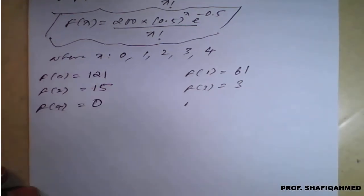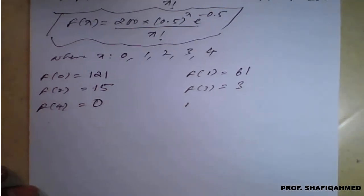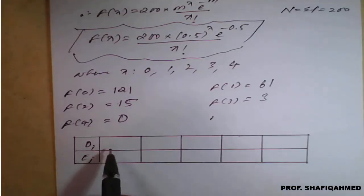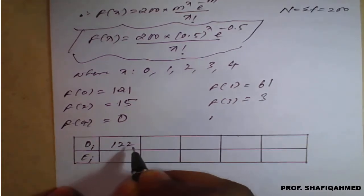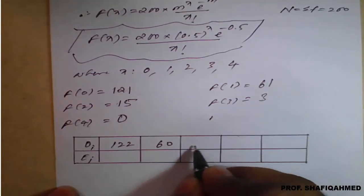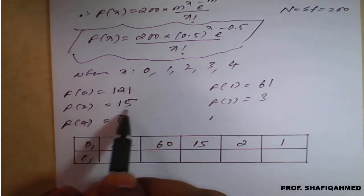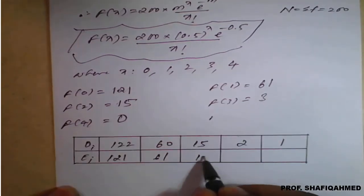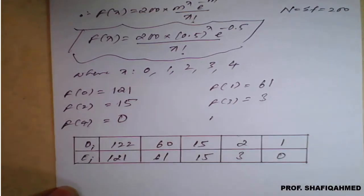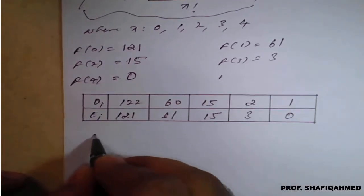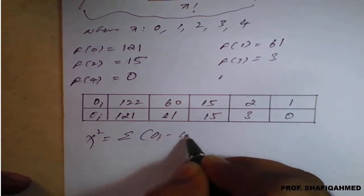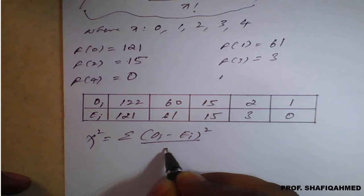So, therefore, we will prepare a table for observed and expected or theoretical values. The observed values taken from the table are 122, 60, 15, 2, 1, and the theoretical values we just calculated are 121, 61, 15, 3, 0. By using this, we will apply the chi-square formula: chi square equals summation of (O_i minus E_i) whole square divided by E_i.